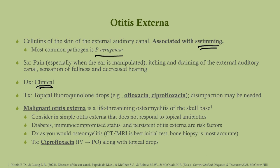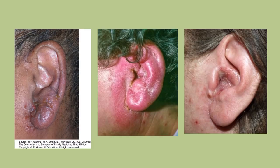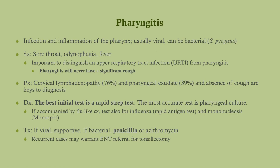Malignant otitis externa is a life-threatening osteomyelitis of the skull base — a very different process despite sharing the name. Consider this in patients who don't respond to eardrops, are diabetic or immunocompromised, or have persistent otitis externa. Diagnose it like osteomyelitis: CT or MRI is the best initial test; bone biopsy is the most accurate. Treatment is IV progressing to oral ciprofloxacin along with topical drops. The other name for otitis externa is swimmer's ear.